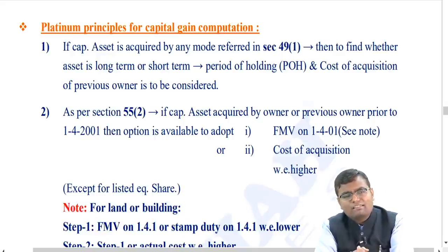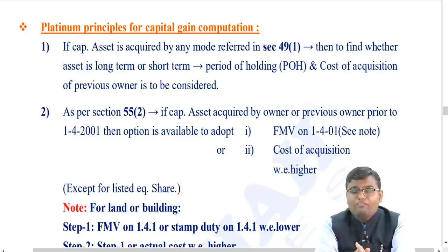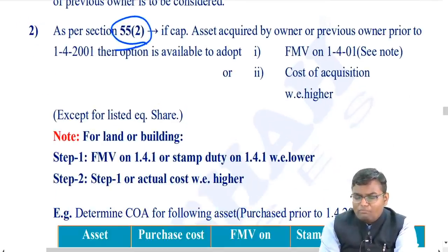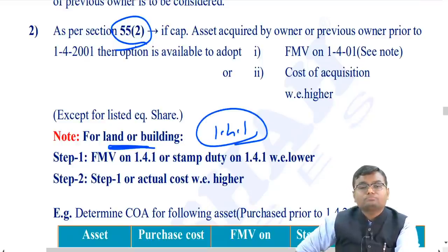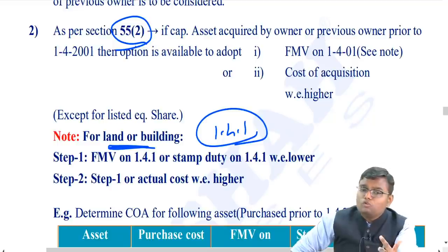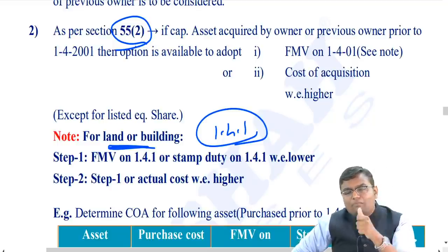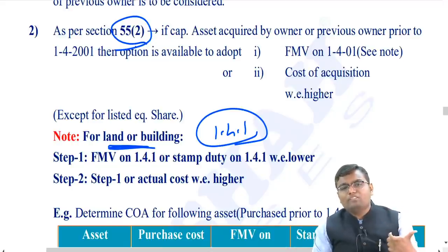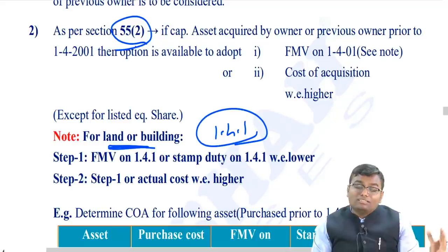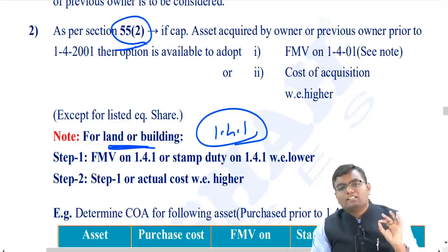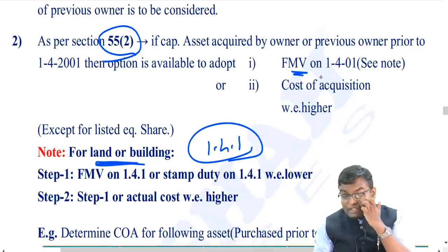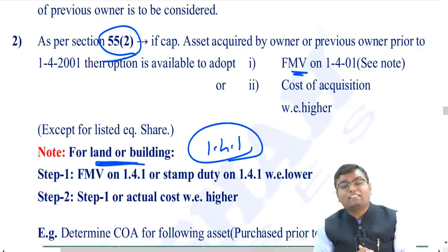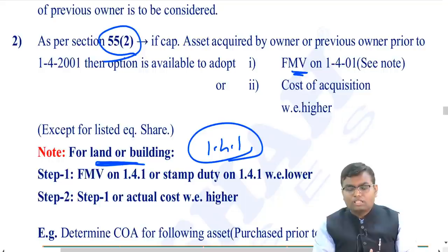This rule does not apply to listed equity shares (covered separately). For land or building acquired prior to 1st April 2001, there is an amendment: Step 1 - fair market value on 1st April 2001 or stamp duty value on that date, whichever is lower. Step 2 - that amount or actual cost, whichever is higher. So FMV on 1st April 2001 cannot exceed the stamp duty value for land or building.